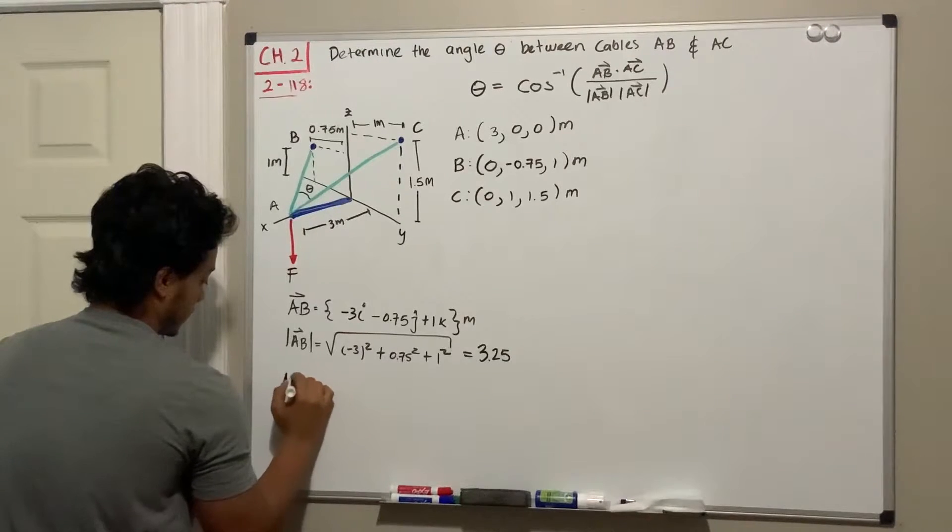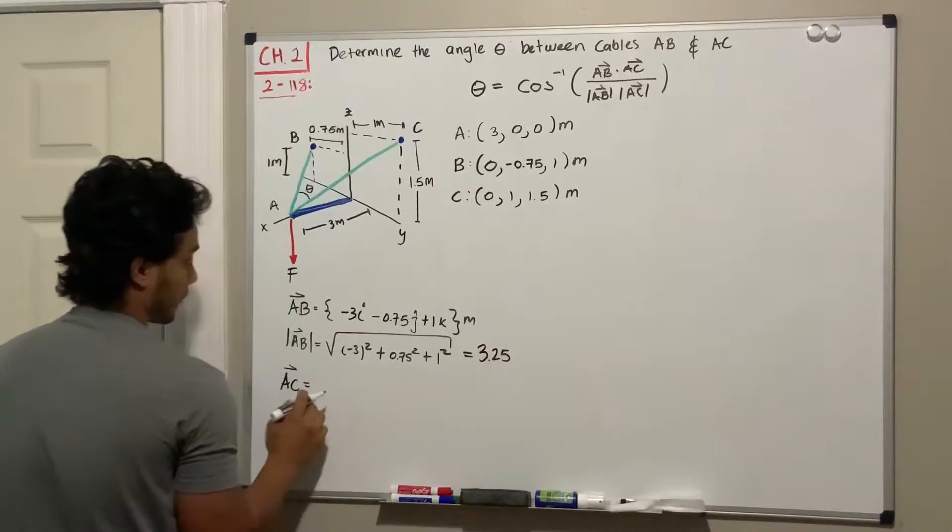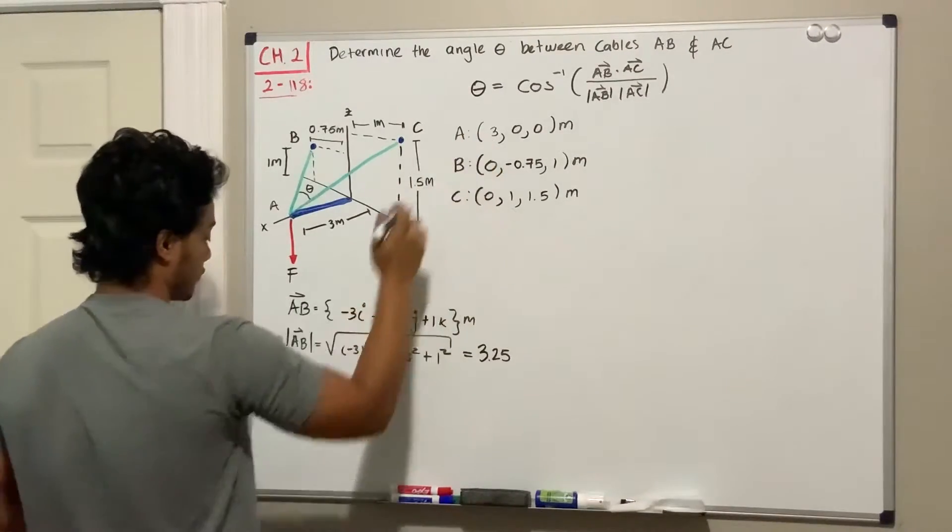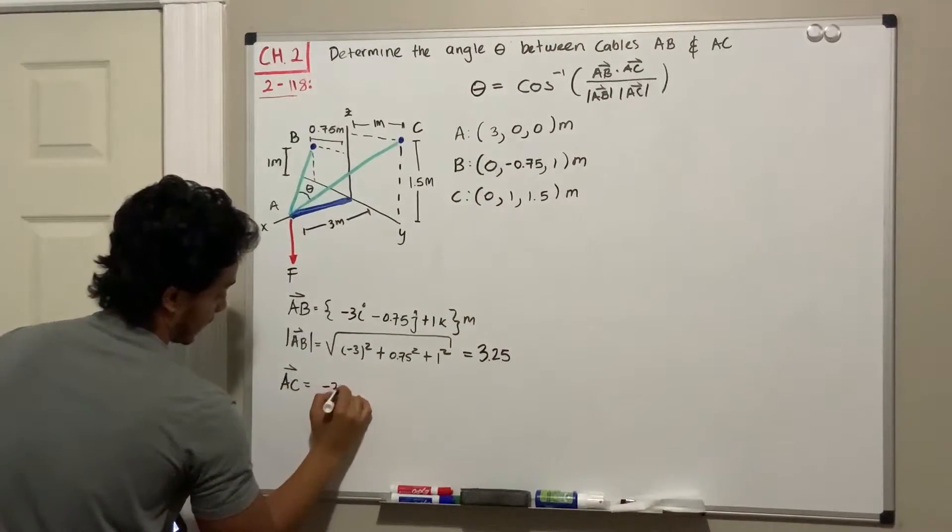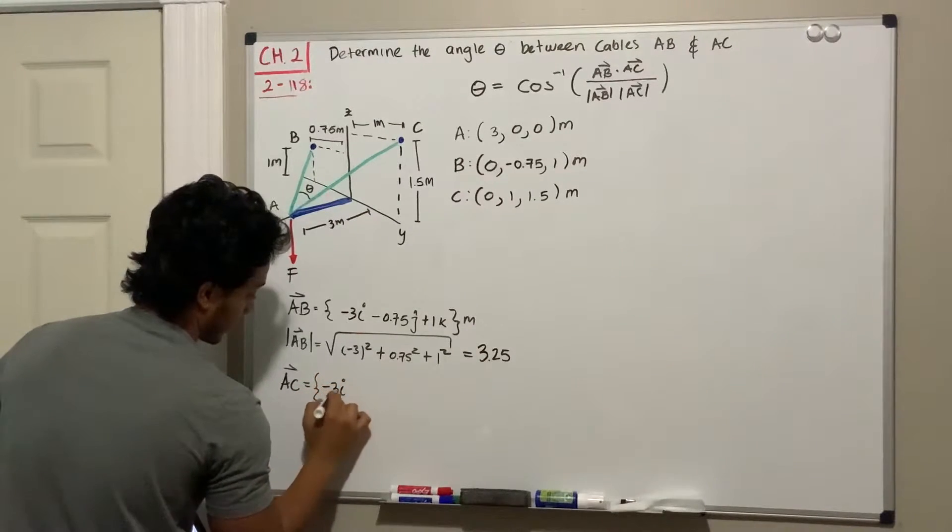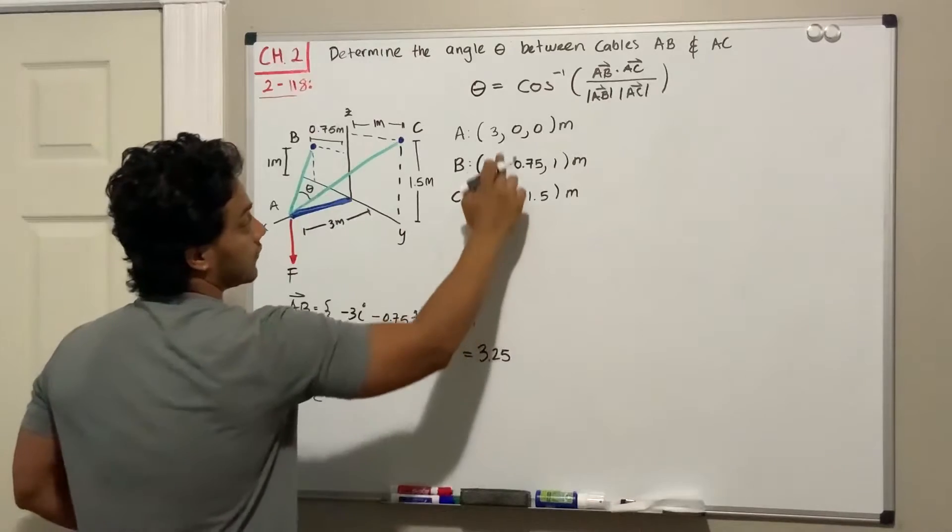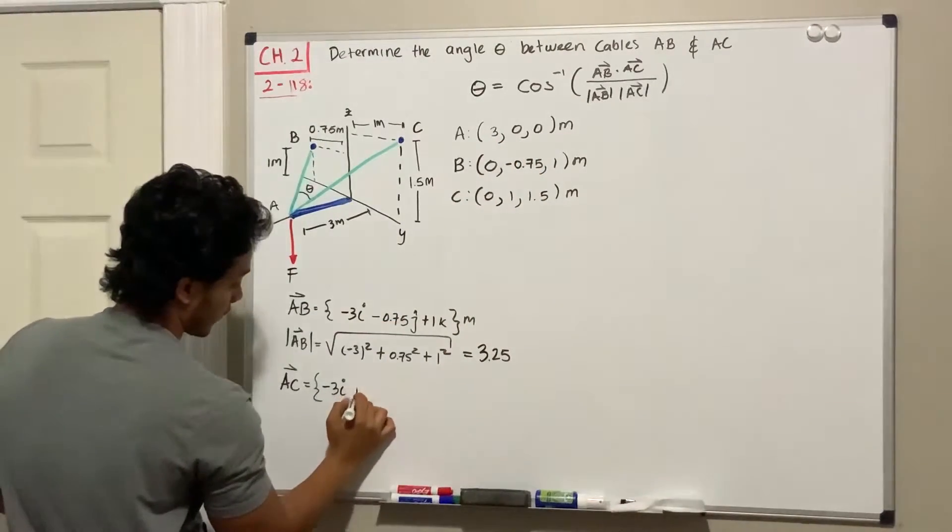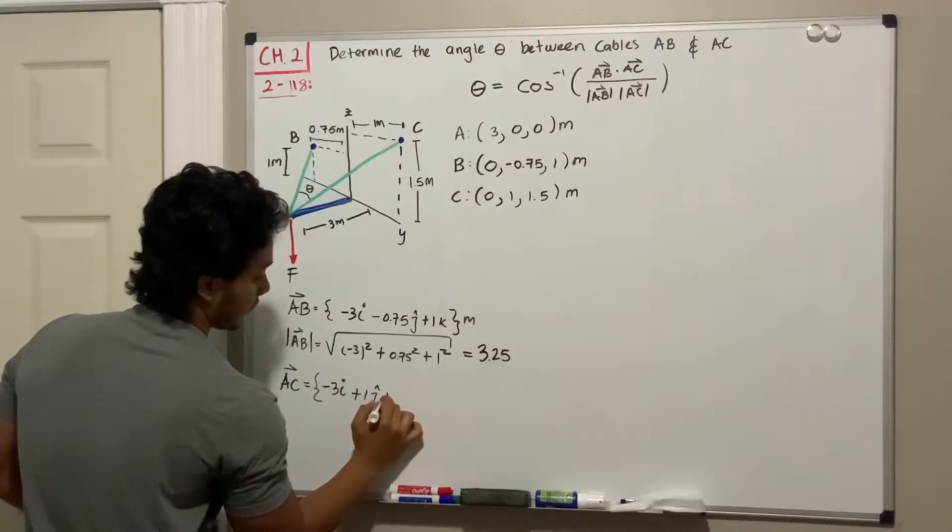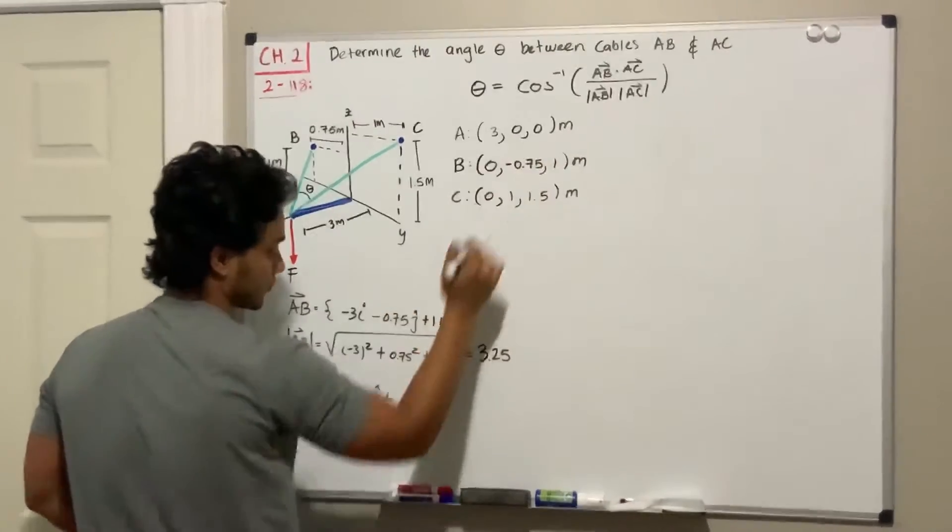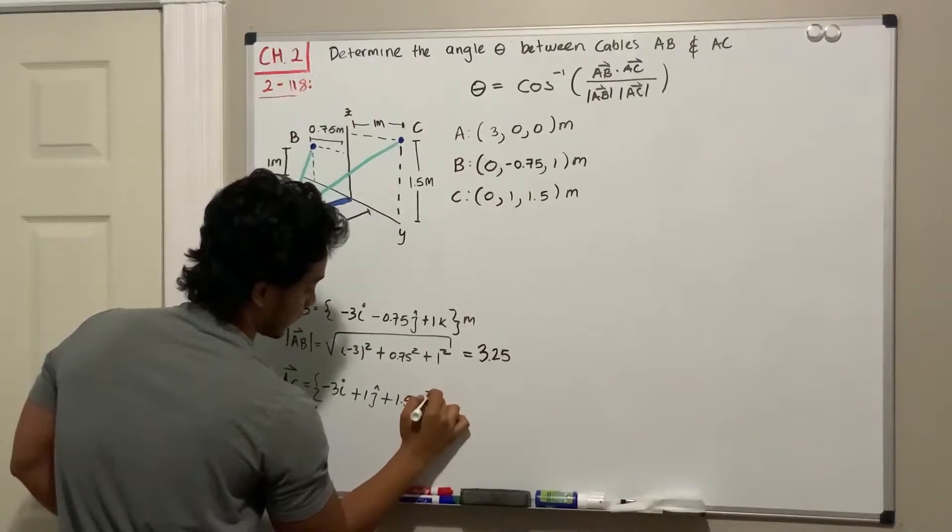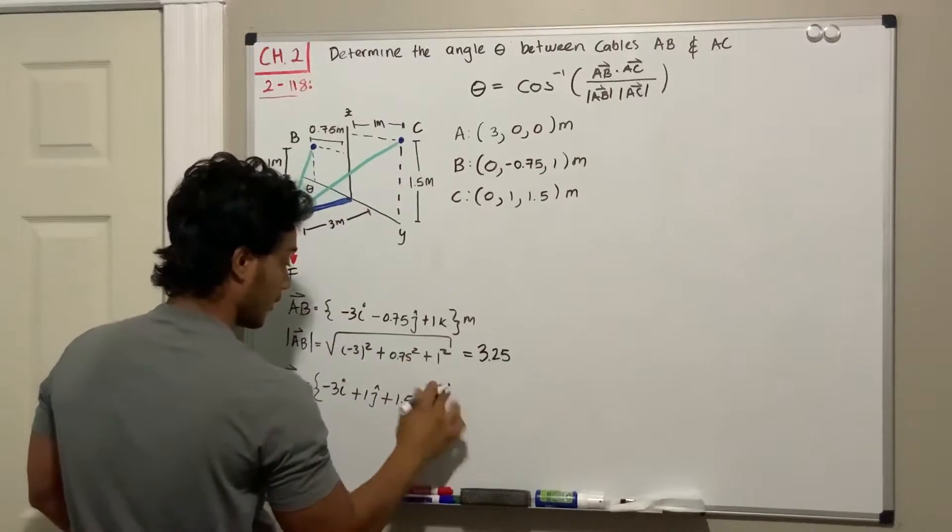vector AC. For vector AC, we do C minus A. We do 0 minus 3, that gives negative 3 in the i-direction, 1 minus 0 gives 1 in the j-direction, and 1.5 minus 0 gives 1.5 in the k-direction.